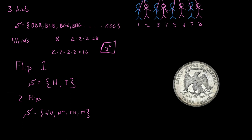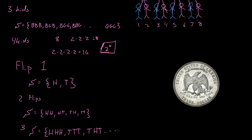And it's the same idea if we were to flip it three times — the sample space of flipping it three times would look like this: heads-heads-heads, tails-tails-tails, tails-heads-tails, and it would just go on.